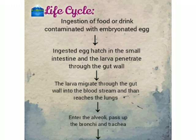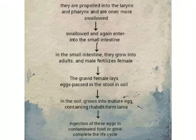Life cycle: when embryonated egg in contaminated food or drink is ingested, the ingested egg hatches in the small intestine and the larva migrates through the gut wall and penetrates into the bloodstream. It then reaches the lungs, enters the alveoli, and passes through the bronchi, trachea, larynx, and pharynx. It is then swallowed again and enters the small intestine, where it grows into an adult. Fertilization occurs and the gravid female lays eggs.